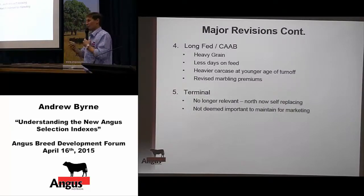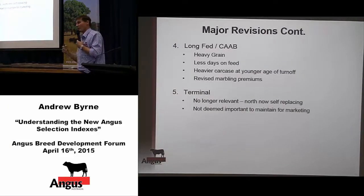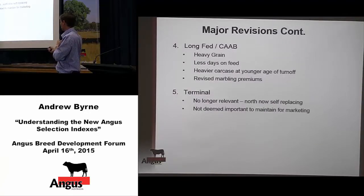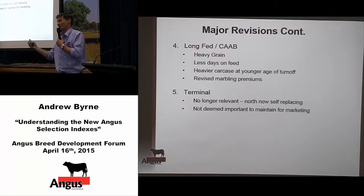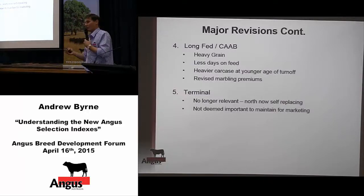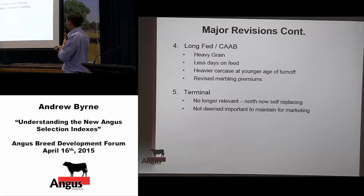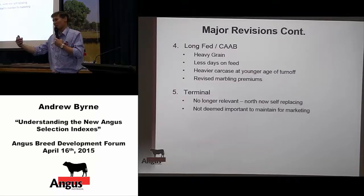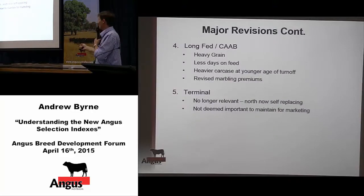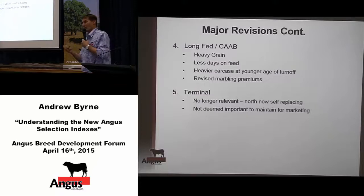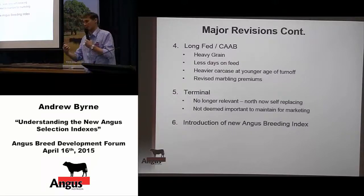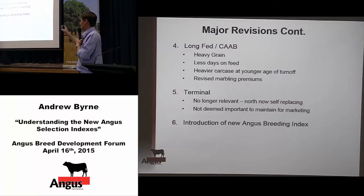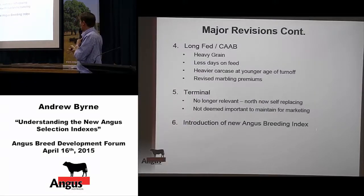The terminal index has obviously no longer been produced. The major driver behind that was feedback that while there was still a terminal program going on in the north, people were now more using Angus genetics to infuse into their program and retain females that had some Angus content. So the terminal index wasn't really relevant anymore. It's really been replaced by the Angus Breeding Index, which we'll talk about in a second — while it's no longer a northern-specific index, the Angus Breeding Index is a bit more of an all-purpose index.